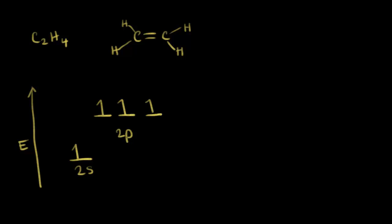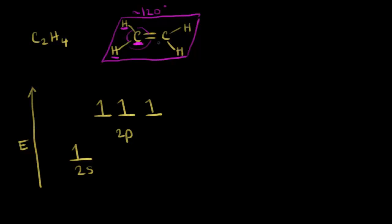In an earlier video, we saw that when carbon is bonded to four atoms, we had sp3 hybridization with a tetrahedral geometry and an ideal bond angle of 109.5 degrees. If we look at one of the carbons in ethene, we don't see the same geometry. The geometry of the atoms around this carbon is planar — actually this entire molecule is planar — and the bond angles are close to 120 degrees. This carbon is bonded to only three atoms: a hydrogen, a hydrogen, and a carbon. So we must need a different hybridization for the carbons in the ethylene molecule.